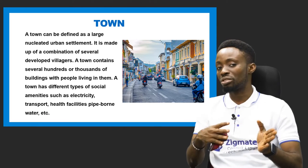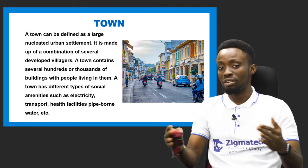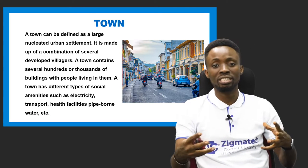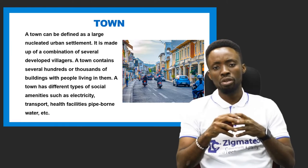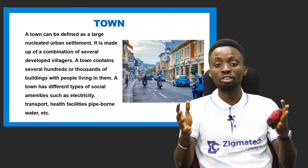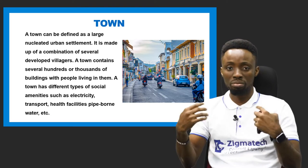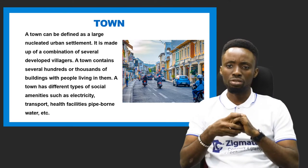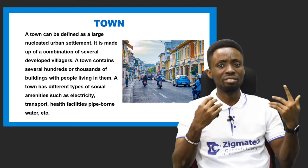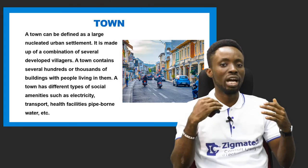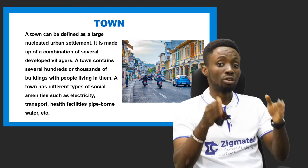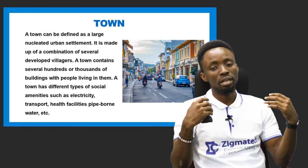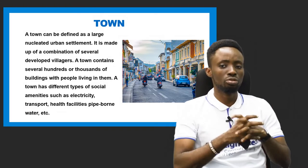A town, in contrast to the village, is a nucleated urban settlement that is very large. A town is actually formed from two or more villages that have developed over a long period of time. A town contains several hundreds or thousands of buildings. In a town, we have most of the social amenities we need, like electricity, transportation networks, health facilities, and pipe-borne water.